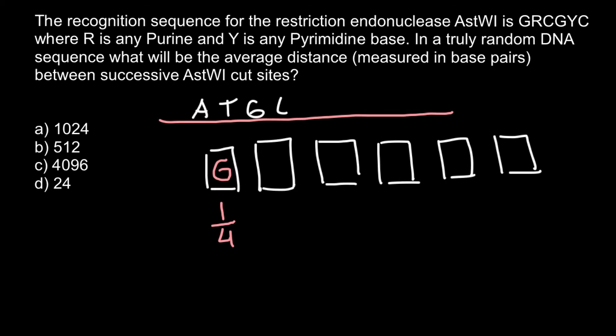The probability that in the second position we are going to have R, which stands for purine, is two out of four bases would be purines and another two bases would be pyrimidines. The probability that here we would have purine would be two out of four or one half. So let's put one half here. The third base has to be cytosine, and the probability that the third base would be cytosine would be one quarter.